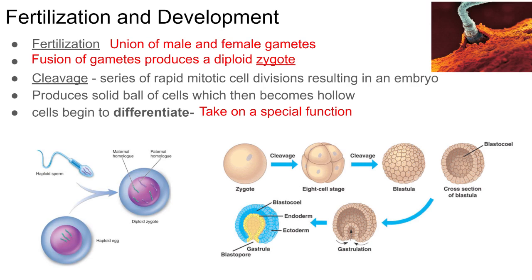What happens to the zygote over time? It starts to grow — from one cell into two cells, then four, each time the number of cells doubles. That process happens by mitosis. The single-cell zygote divides to two cells, then four, eight, sixteen. The term for these first cell divisions is called cleavage — the cell has been cleaved in half.